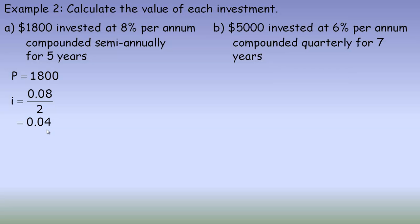Next is the n value. For 5 years with 2 semi-annual periods in each year, 2 times 5 equals 10 compounding periods. So in this investment, the interest is going to be calculated 10 times. That's why it's compounded — you actually earn interest on your interest.